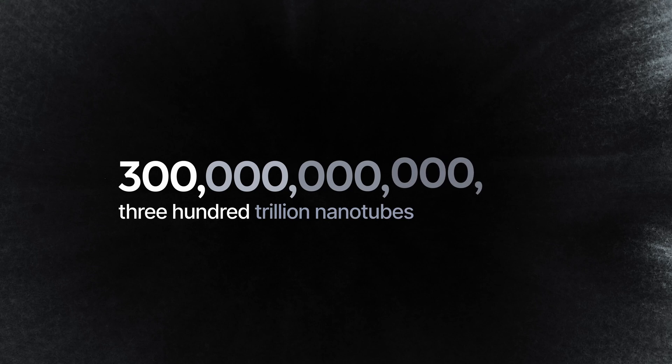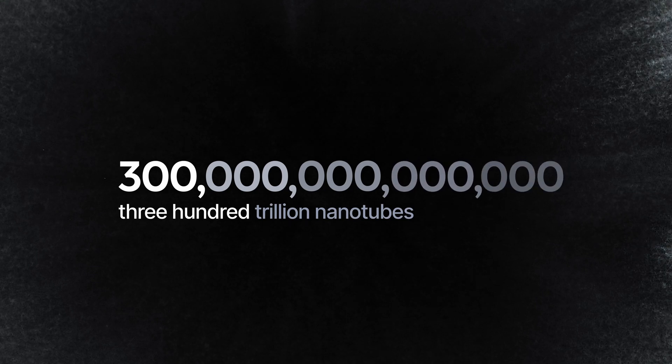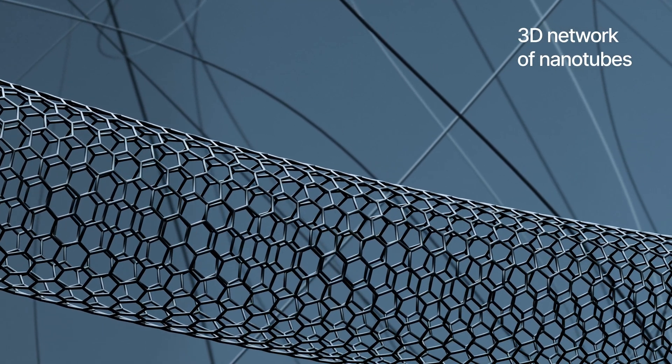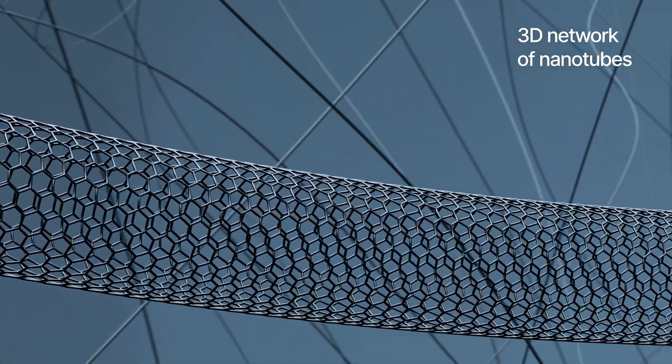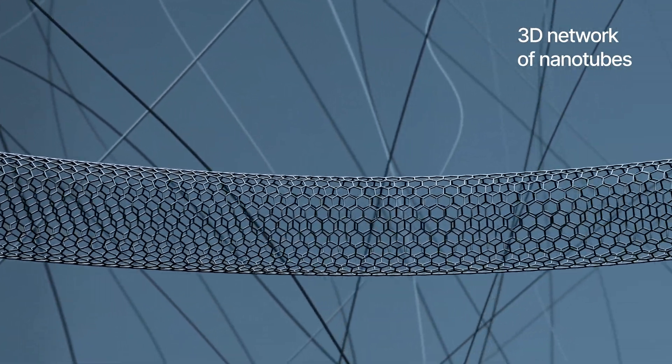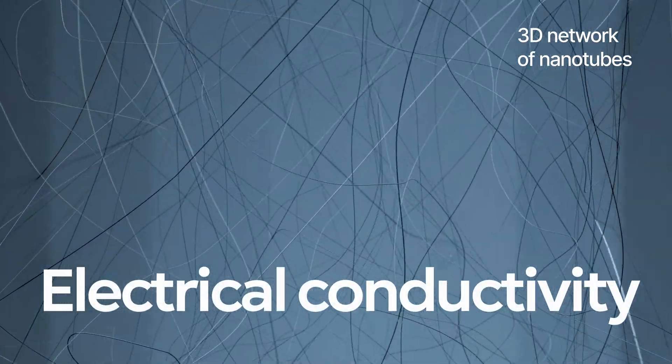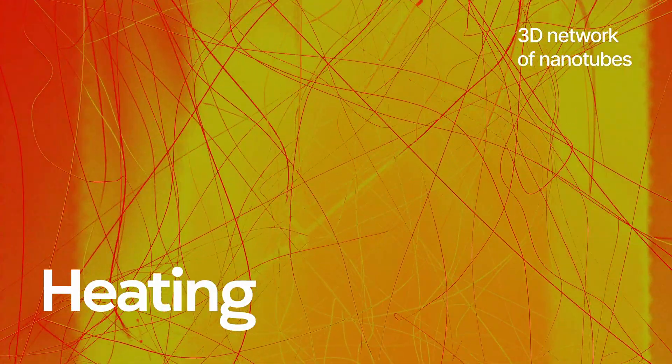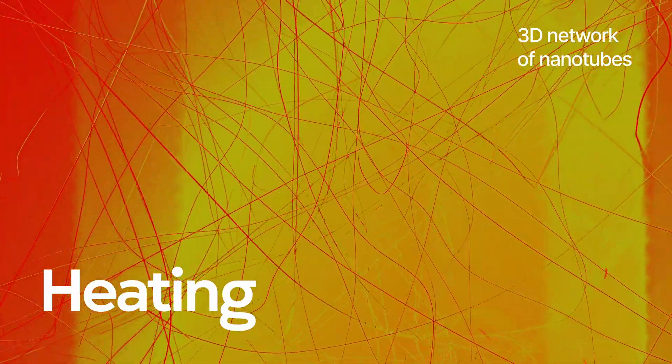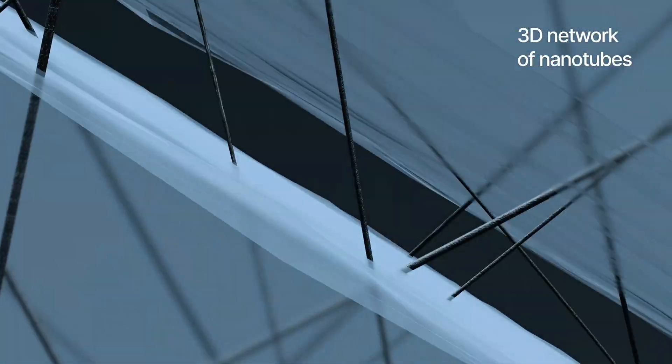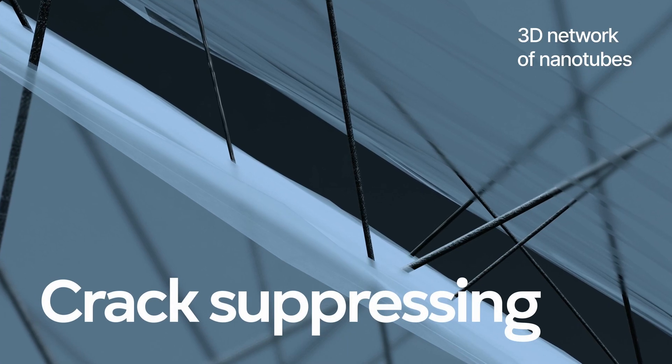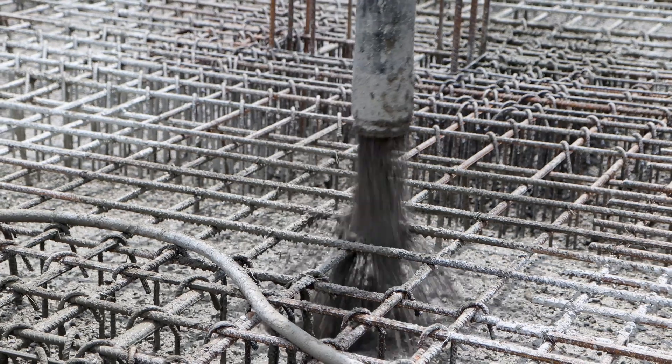Therefore, even a tiny amount of nanotubes mixed in any material creates a powerful 3D spatial network in it and reinforces it. The unique properties of the tubes are transferred to the material itself. The material begins to conduct current or heat; nanotubes reinforce the material, suppressing or redirecting cracks.